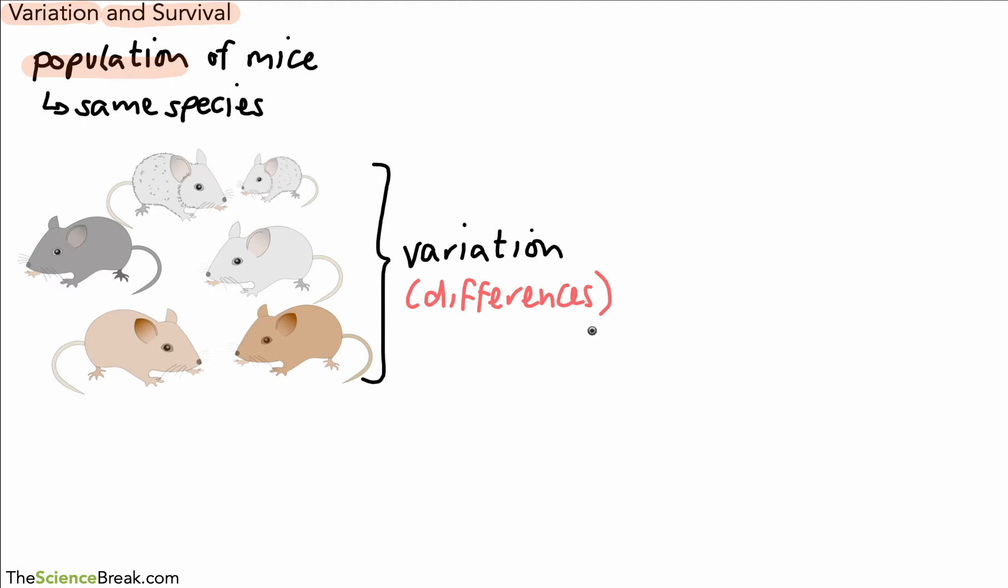Here we've got a population of mice, there's variation, and we can actually list out some of the variation in these mice. One of the obvious ones is fur color. There's variation so we've got different fur colors: light gray, dark gray, light brown, dark brown and a slightly furrier mouse here. The fur color is a difference between the mice.